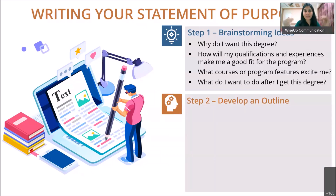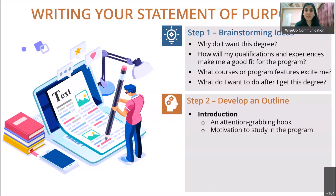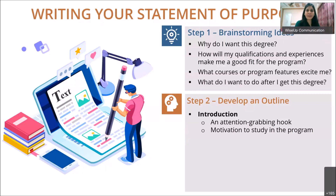The second step is to develop an outline. Set your brainstorming ideas aside and divide your SOP into three sections: introduction, body, and conclusion. For the introduction, write an attention-grabbing hook — for example, what was your motivation to study this program, or when did you first decide you wanted to pursue a higher degree in this field? Write it as a story, but keep it strictly professional.